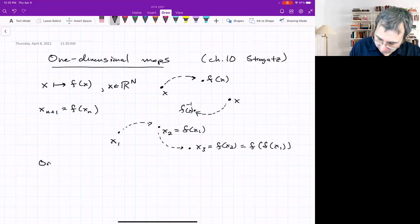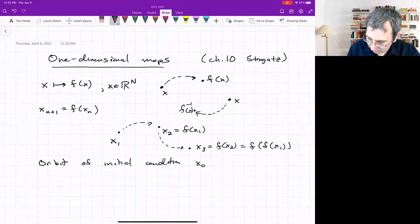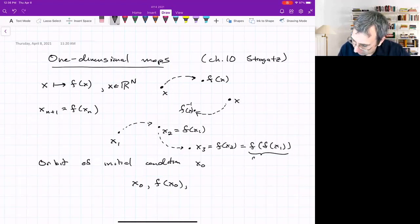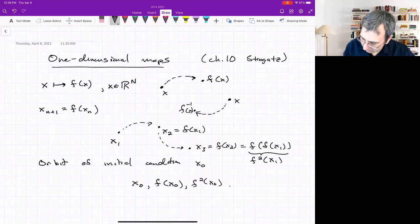We can define the orbit of an initial condition, x naught, an initial condition, and then all of its future iterates under the map. And as shorthand, we would write, say this f of, this would be f2 of x1. So we'd write f2 x naught, f3 x naught. So it's a collection of discrete points.